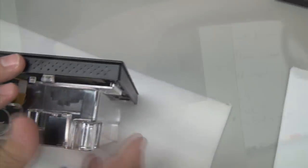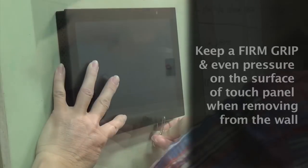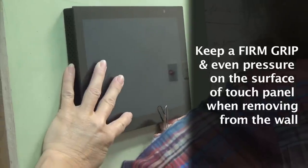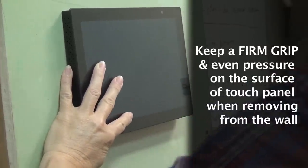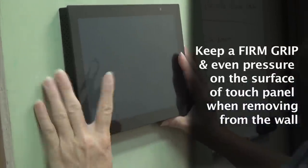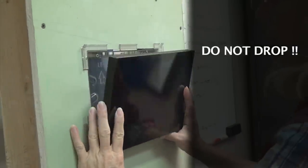Likewise, for wall removal, feel for the small gap after releasing the first snap. Do not pull on the glass. Do have a firm grip and even pressure on the surface and frame edge when loosening the second snap. Don't let go!